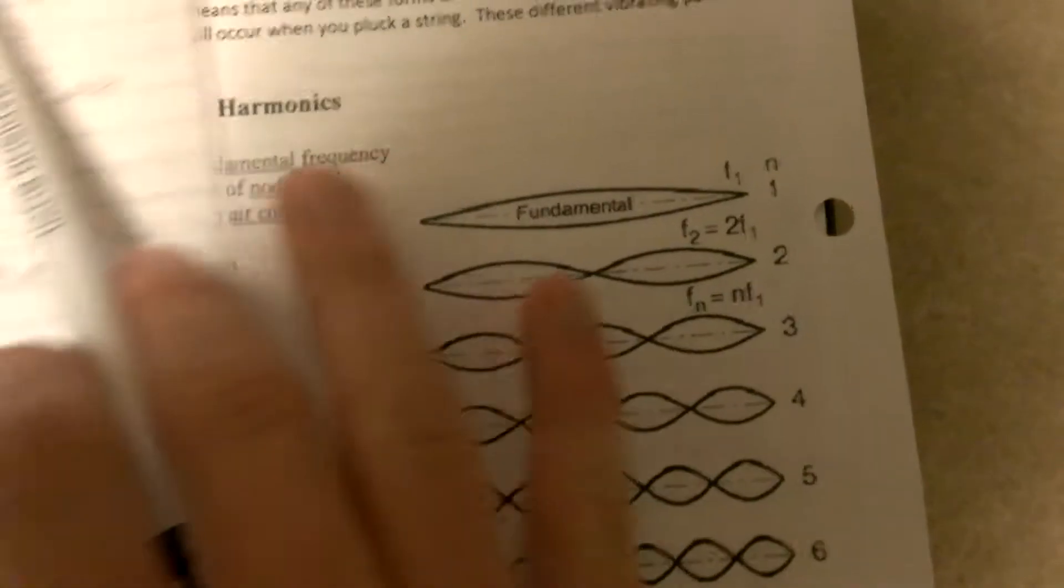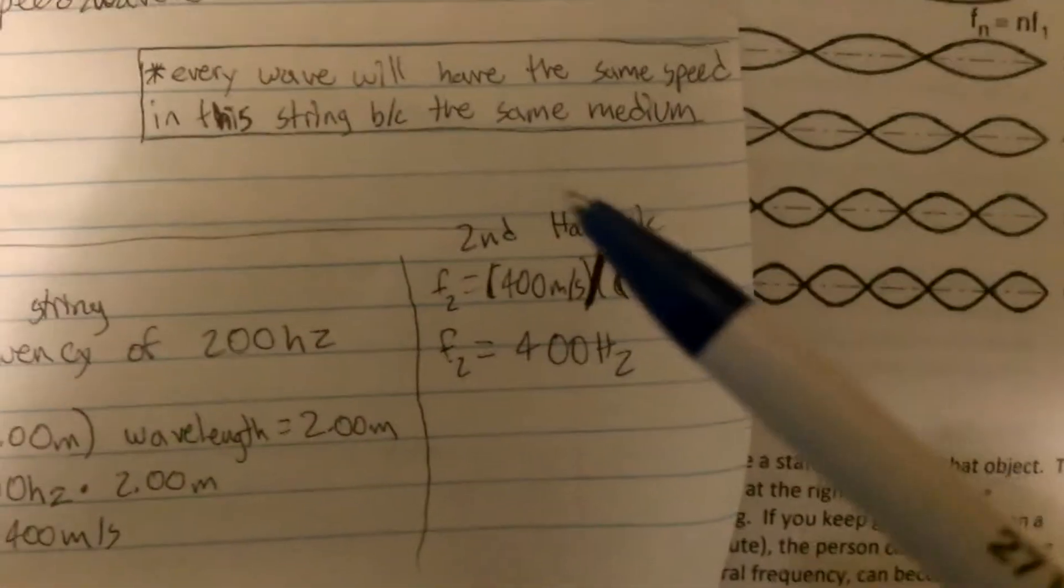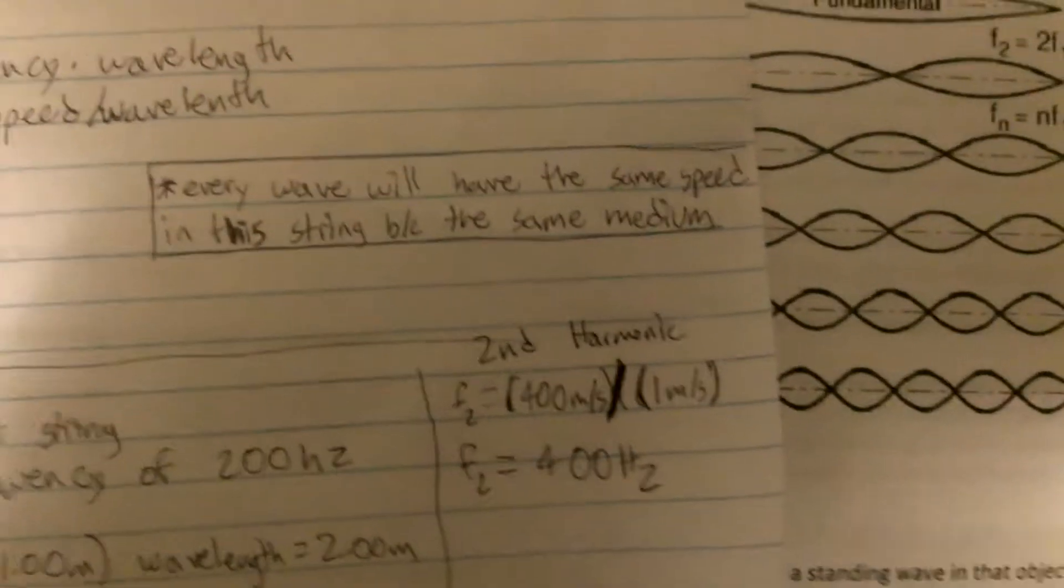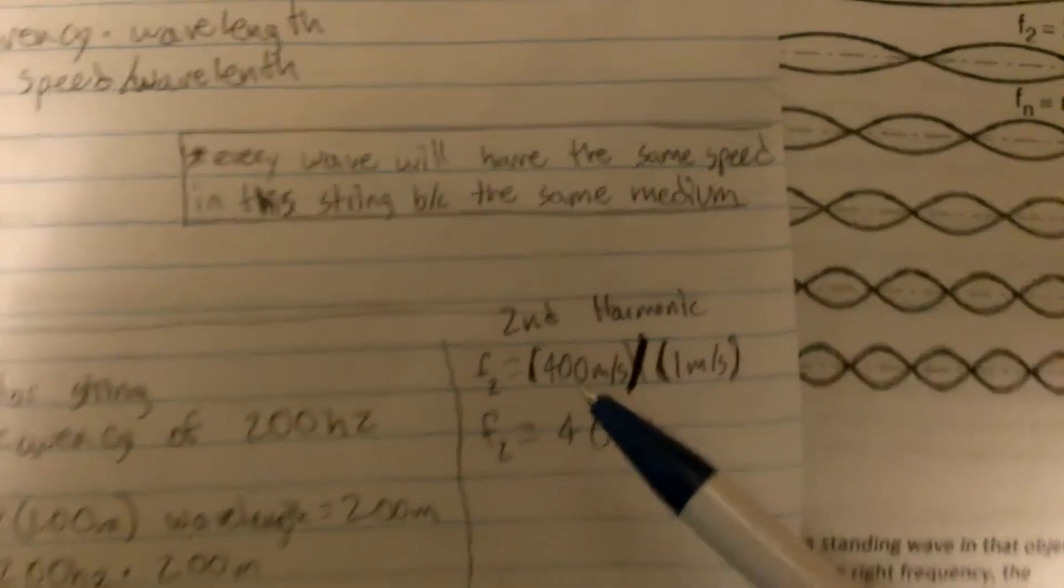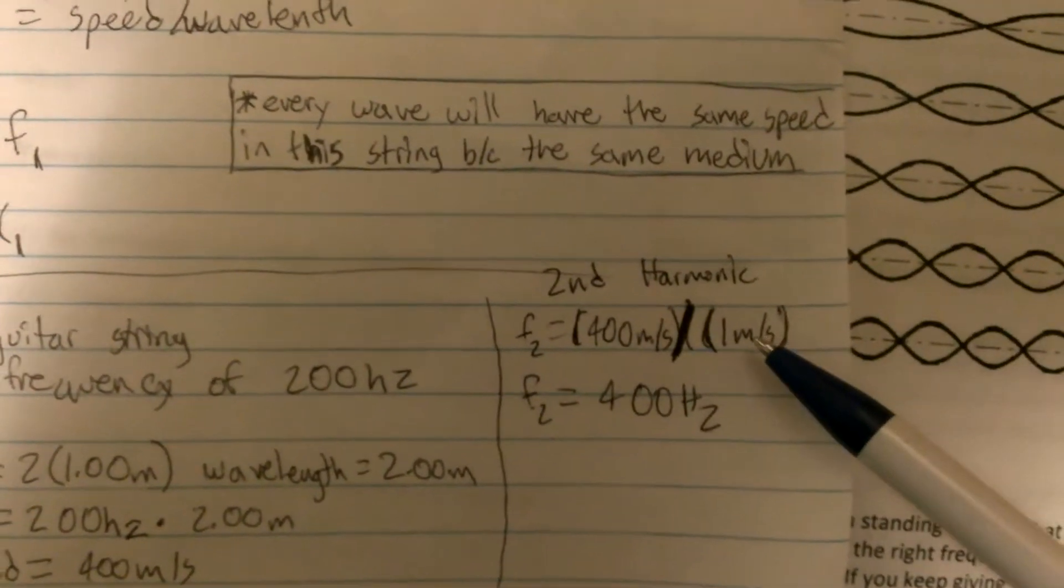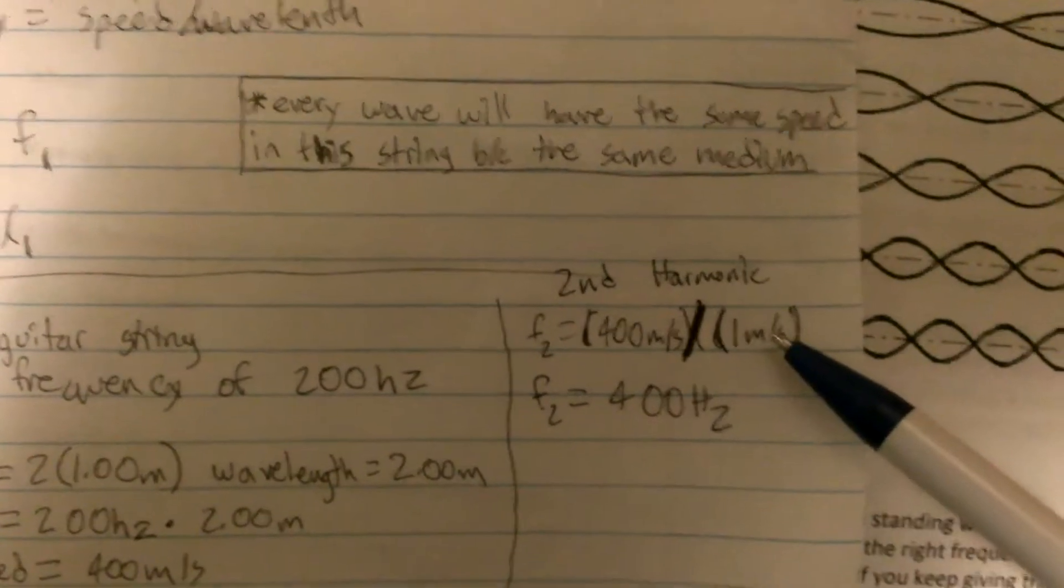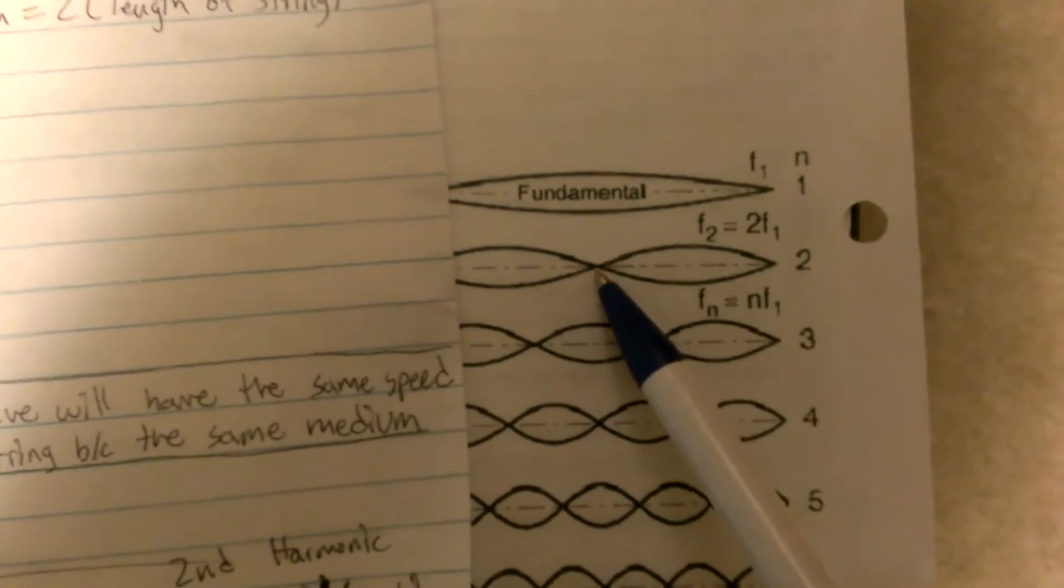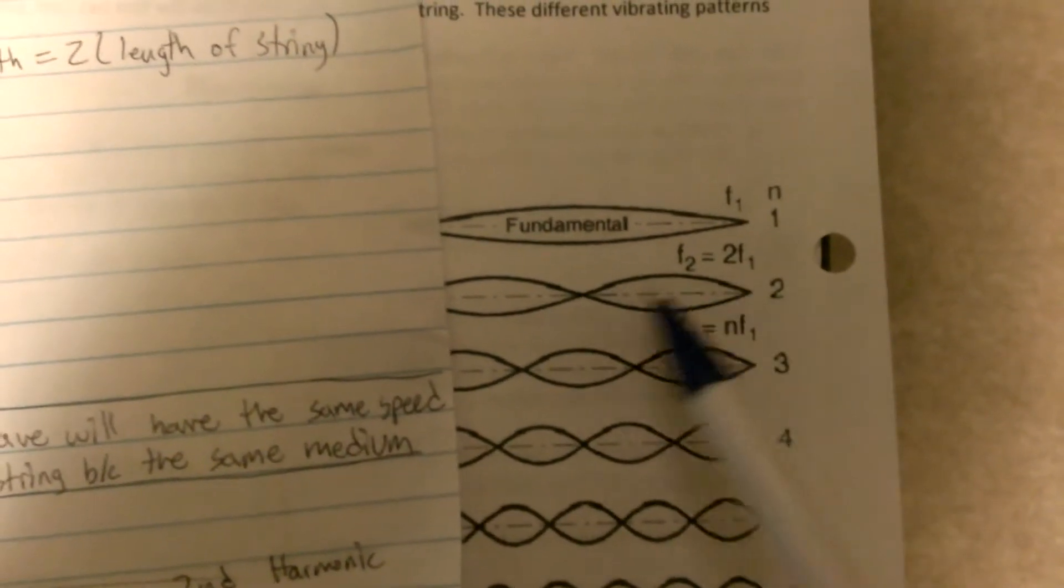So then, when you're trying to find the second harmonic, which would basically be trying to find this one right here, you would change it to this equation to find it, and you would see that your second frequency is equal to 400 meters per second, which is your original speed, and that can't change because it's the same medium, divided by the wavelength, which, if you may have noticed, I have cut in half from its original two meters, it is now one meter, because, as you see, I added a node, and that cuts the wavelength to being only one meter, instead of the original two meters from the fundamental harmonic.